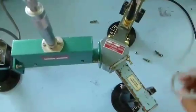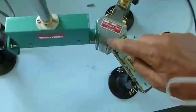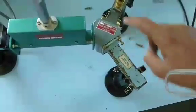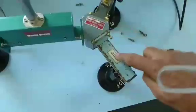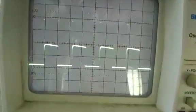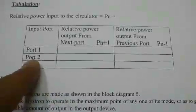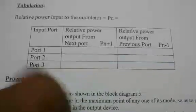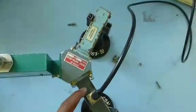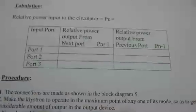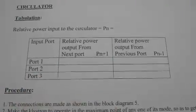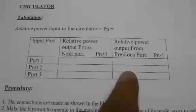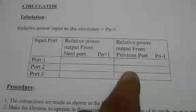Now the input is given to port two. The output is first seen at port three with port one match terminated, and we get approximately 1.8 divisions. This is noted as the output from the n+1 port. Then the diode detector is moved to port one with port three match terminated, and we get a very low output of 0.1 divisions. This is entered as the n-1 port output for input at port two.